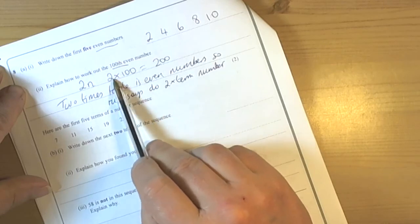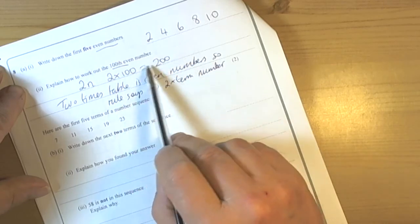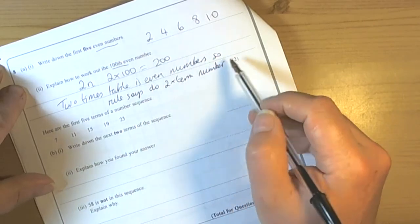For this question the examiners were just looking for 2 times 100. It's in the two times table. Anything along those lines will give you the mark.